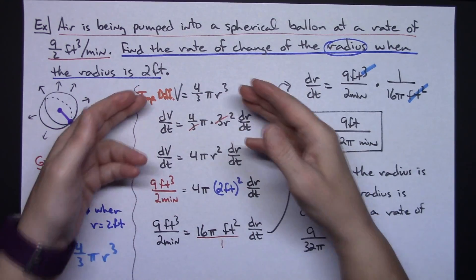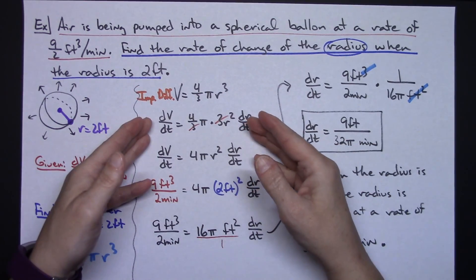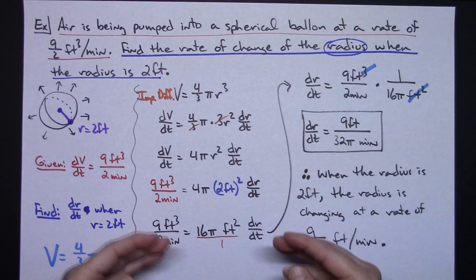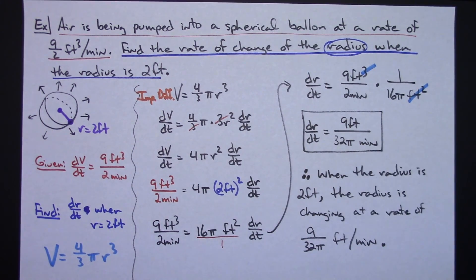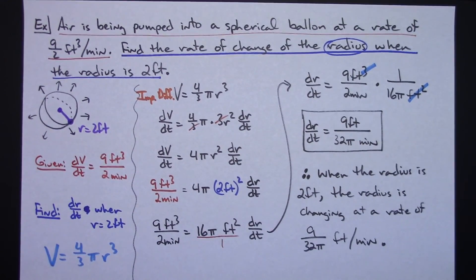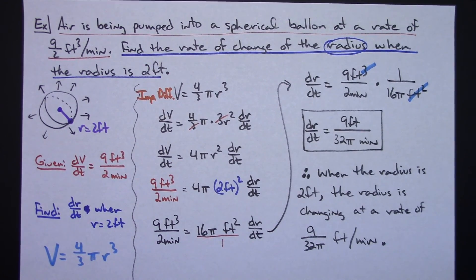And then, implicit differentiation, make sure you're doing it with respect to time, plug in your known values, and then solve for your unknown. Thanks for watching, and be sure and keep an eye out for more related rates videos. Thanks.